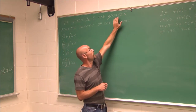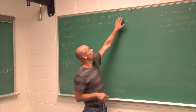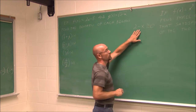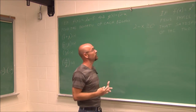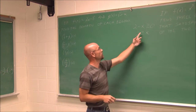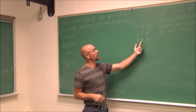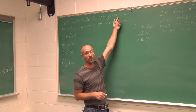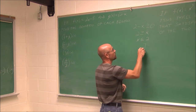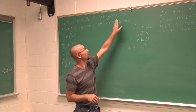So I take 2 minus x and set it greater than or equal to zero, because we can't take the square root of a negative value. Solving: add x to both sides, giving 2 is greater than or equal to x, which means x is less than or equal to 2. This is the domain restriction of g of x. In interval notation, that's negative infinity to 2, including the value of 2.